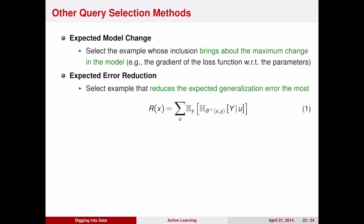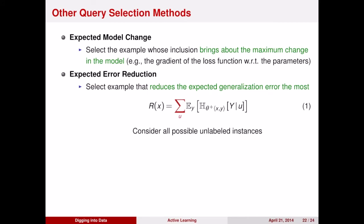You can also choose the example that reduces the expected generalization error the most. So if you knew the answer to some data point, how would that change what you expect your error would be? You can compute this by considering all of the unlabeled instances, consider the expectation over the labels of that instance, and then see how uncertain your model is once you have that information, and choose the example for which you get the most reduction in your uncertainty.